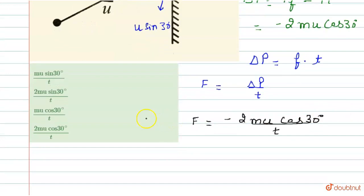Now check the options. Option fourth is correct option. This is 2 m u cos 30 degree by t.